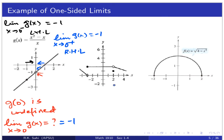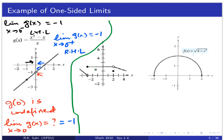Now let's look at the second function. This function is defined at −3, but we can see from the graphical description that the limit does not exist at −3.